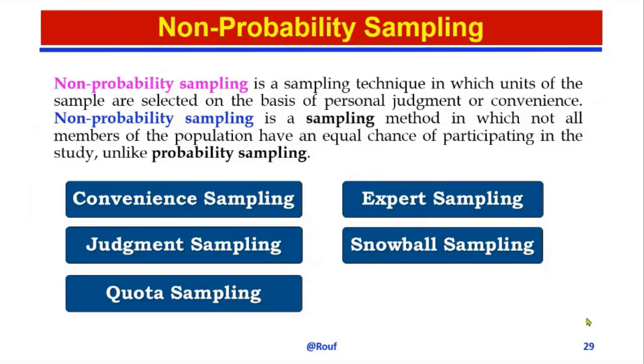Non-probability sampling is a sampling method in which not all members of the population have an equal chance of participating in the study, unlike probability sampling.